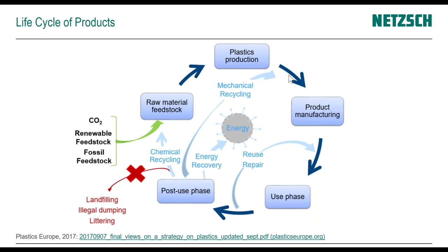The cycle I just explained focuses on post-consumer waste, but we also have a separate cycle within product manufacturing using production scrap — what we call pre-consumer waste. This is often handled through mechanical recycling and regrinding. It's really what the industry is doing today; there are hardly any plastics manufacturers that don't do anything with their scrap material.